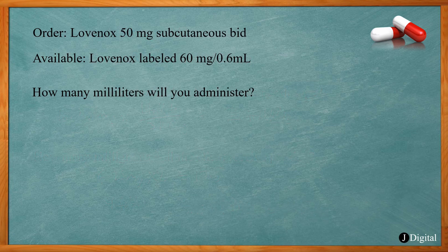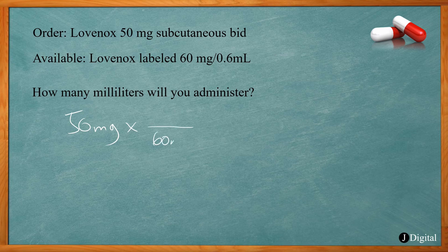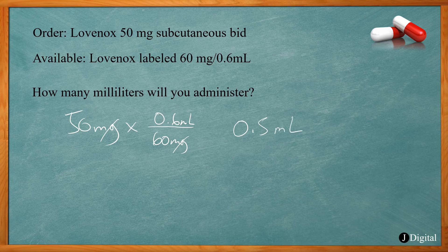In this problem the order is Lovenox 50 milligrams subcutaneously BID — under the skin twice a day. We have available 60 milligrams per 0.6 milliliters. How many milliliters will you administer? We need 50 milligrams; placing milligrams on the bottom and milliliters on top so units cancel: 50 times 0.6 divided by 60 gives 0.5 milliliters. Since 60 milligrams is in 0.6 mL and we need less than that, 0.5 milliliters makes sense.